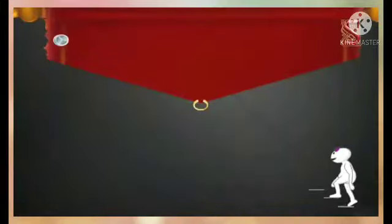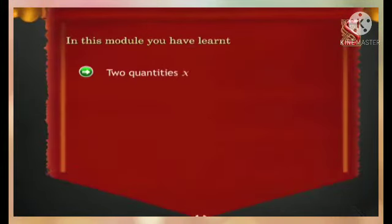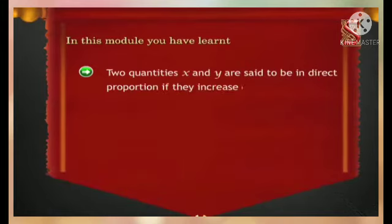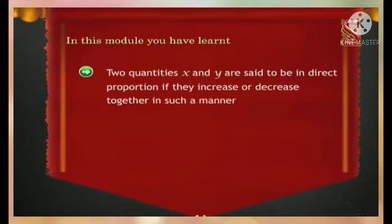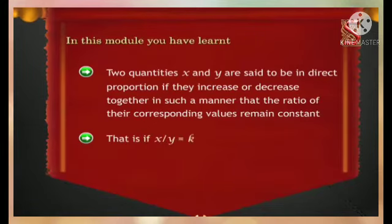In this module, you have learnt that two quantities x and y are said to be in direct proportion if they increase or decrease together in such a manner that the ratio of their corresponding values remains constant — that is, if x/y = k, then x and y are said to vary directly.